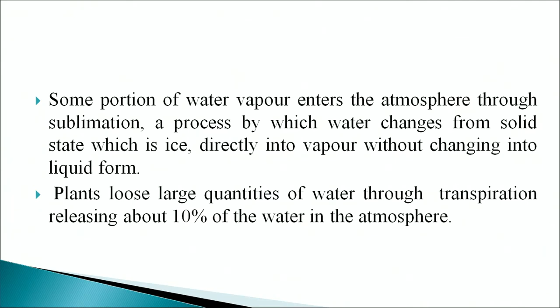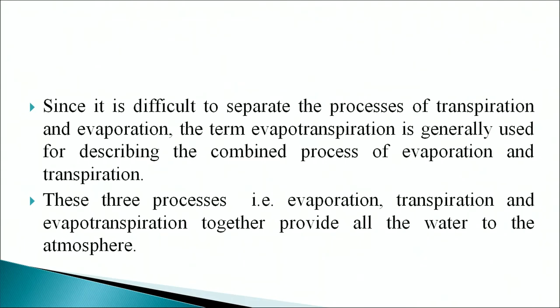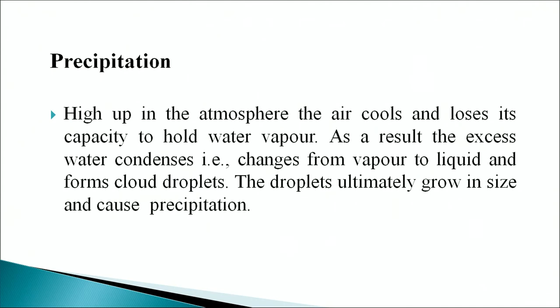Plants lose large quantities of water through transpiration, releasing about 10 percent of the water in the atmosphere. Since it is difficult to separate transpiration and evaporation, the term evapotranspiration is used for describing the combined process. These three processes — evaporation, transpiration, and evapotranspiration — together provide all the water to the atmosphere. High up in the atmosphere, the air cools and loses its capacity to hold water vapor; as a result, excess water condenses from vapor to liquid, forming cloud droplets that ultimately grow in size and cause precipitation.